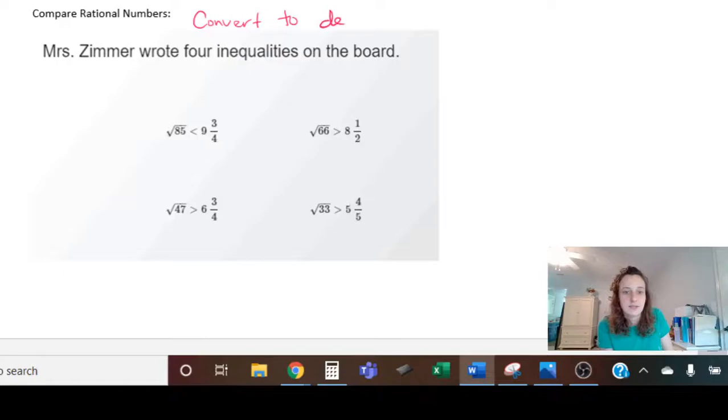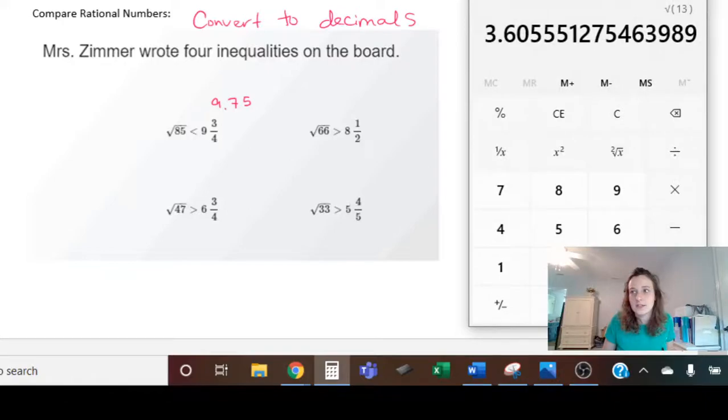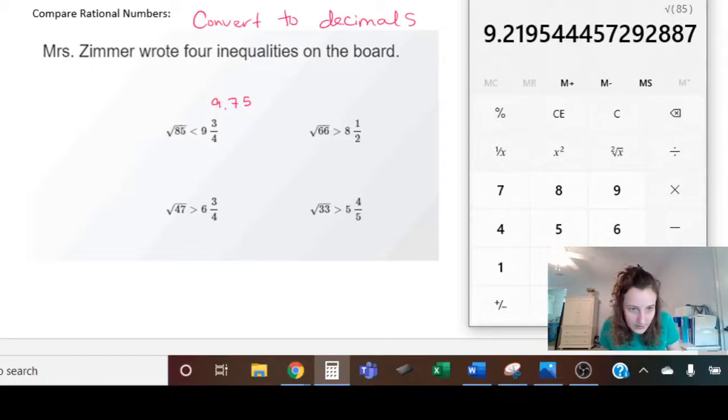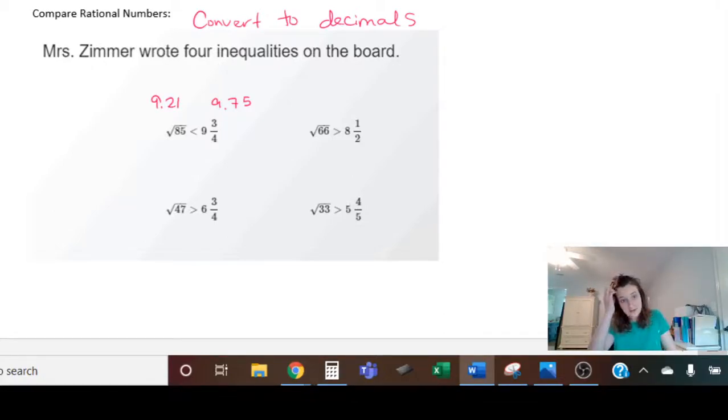So I have 9 and 3 quarters - well, you should know by now 3 quarters is 75 cents, so this is 9.75 on the right hand side. And I can use my calculator over here to find the square root of 85, which is going to be 9.21. So what symbol - it gave me a less than symbol. So is this true? Is 9.21 less than 9.75? And the answer is yes. You're comparing your place values, right? Both of the 9s are the same, so then we have to move on to the second place value - 2 is less than 7. So this one here is true.